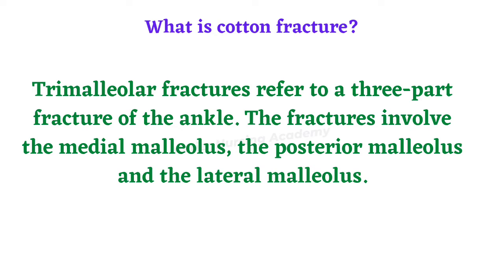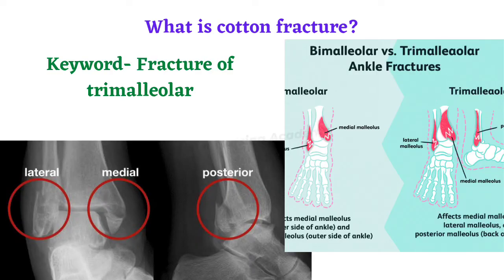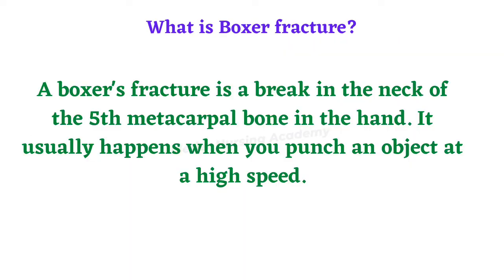Cotton fracture, also called trimalleolar fracture, involves the malleolus bone of the foot being fractured in three areas. The three parts affected are the medial, lateral, and posterior malleolus. You can see in the image the lateral, medial, and posterior parts of the malleolus bone are all involved, which is why it is called trimalleolar or Cotton fracture.